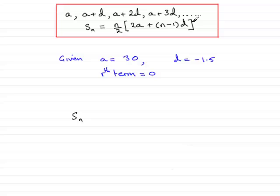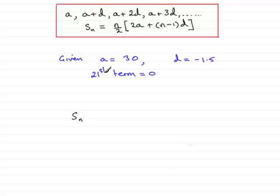The secret of this question is that we already know from the last part of the question, part b, what the nth term was that made this equal to 0. We discovered that it was the 21st term. So the 21st term was 0.